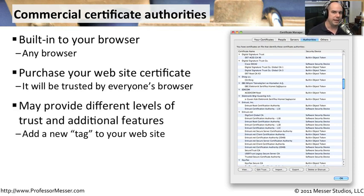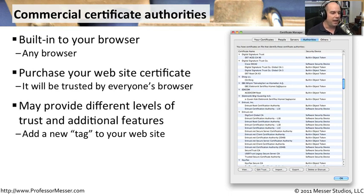Occasionally, these commercial CAs will give you some additional options as well. If you provide them with some additional information about yourself or your organization, they may give you a higher level of trust — a type of tag that you can put on your website to indicate that not only did you get the basic certificate from this third party, but you've provided additional information and have enhanced trust. You can really verify you are who you say you are because you've gone through a couple of extra steps with that third-party provider.